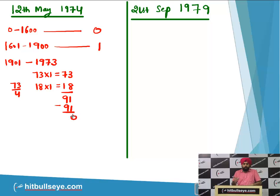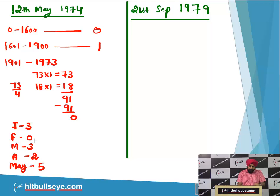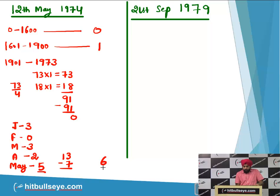Now for the month part: January gives 3 odd days, February gives 0, March gives 3, April gives 2. For May, since we want to go to 12th May, we take 12 minus 7 = 5 May days. Adding all: 3 + 3 + 2 + 5 = 13, so 13 minus 7 gives a total of 6 odd days. Adding 1 day from the year calculation gives 7 odd days total.